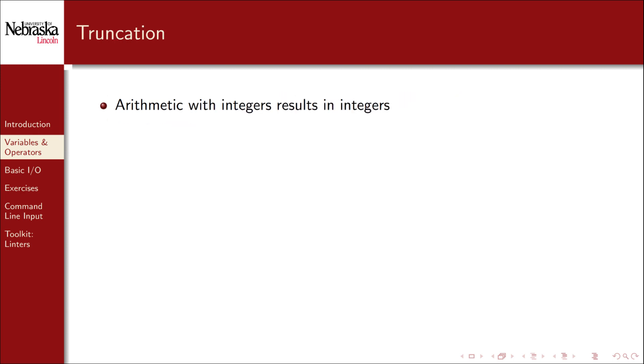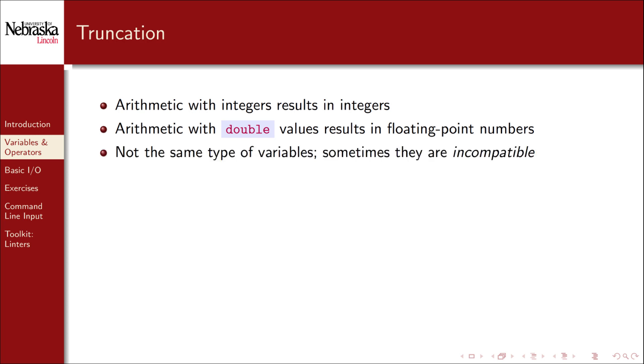We conclude by noting that sometimes funny things happen in code that don't happen when dealing with mathematics. Arithmetic with integers usually results in an integer. Likewise, arithmetic with doubles usually results in double values. But if we mix the two types of variables, they sometimes become incompatible. For example, consider the following code. It's okay to assign an integer value to an integer variable. It's also okay to assign an integer value to a double variable, because 10 can easily be seen to be 10.0. But if we try to assign a double value to an integer variable, things go wrong.